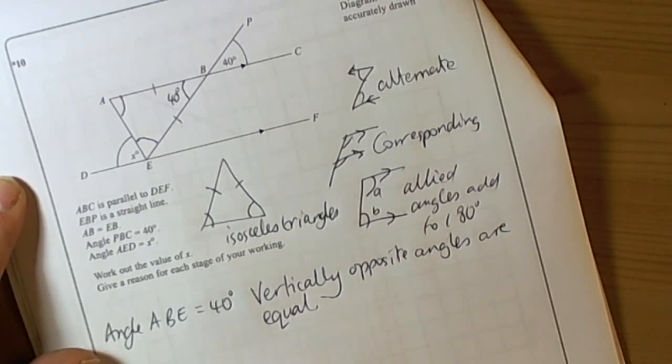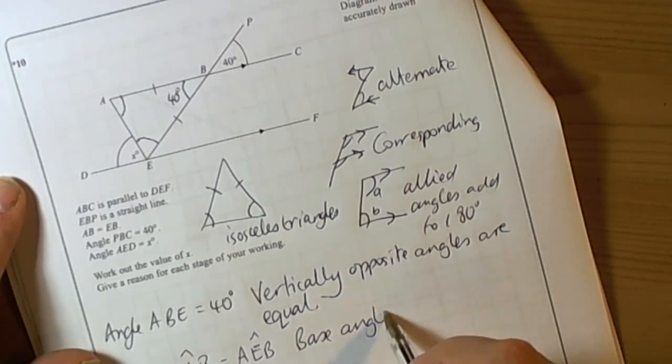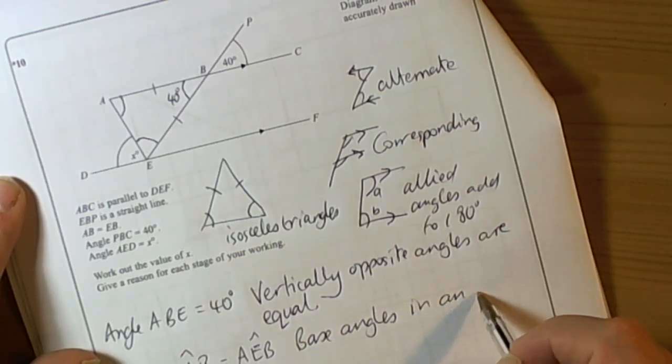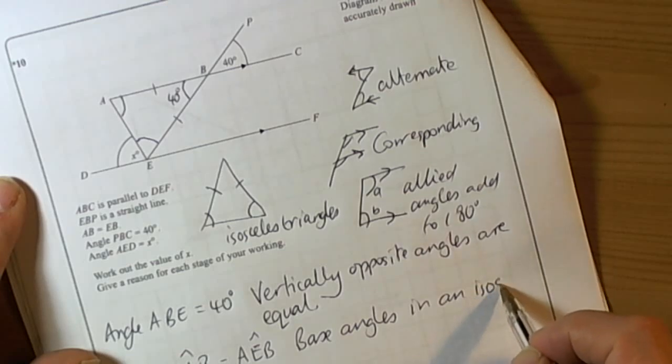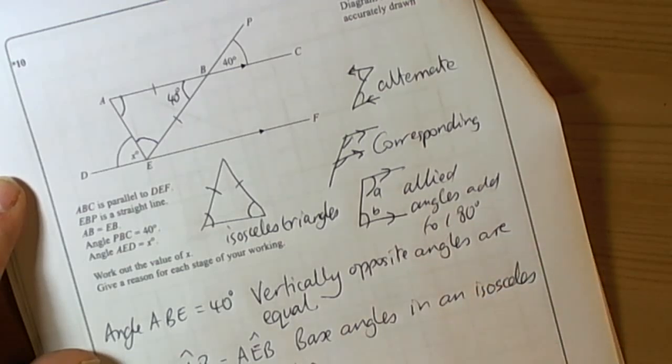So we can say angles EAB equals angle AEB. Again, the reason is base angles in an isosceles triangle are equal.